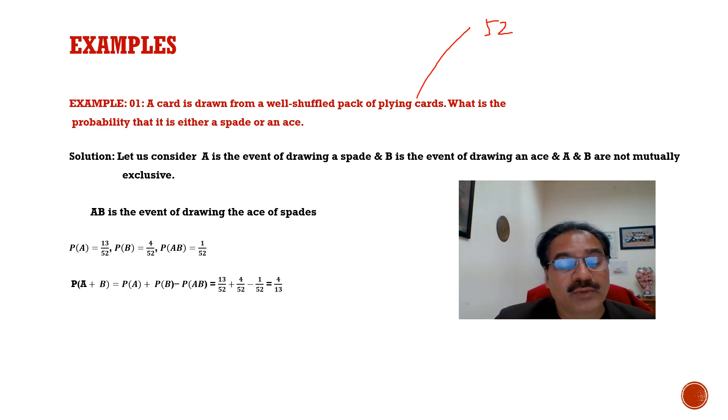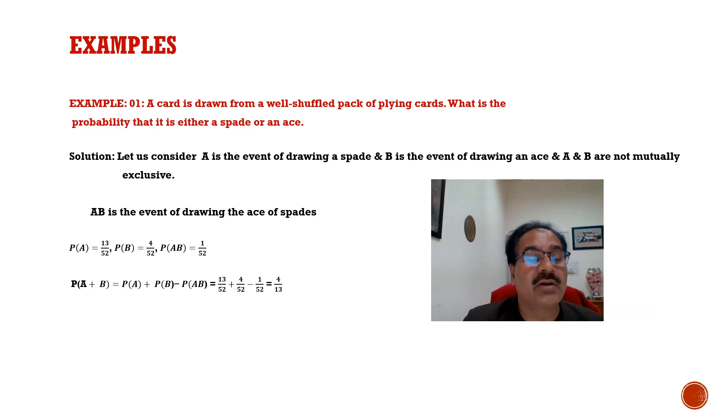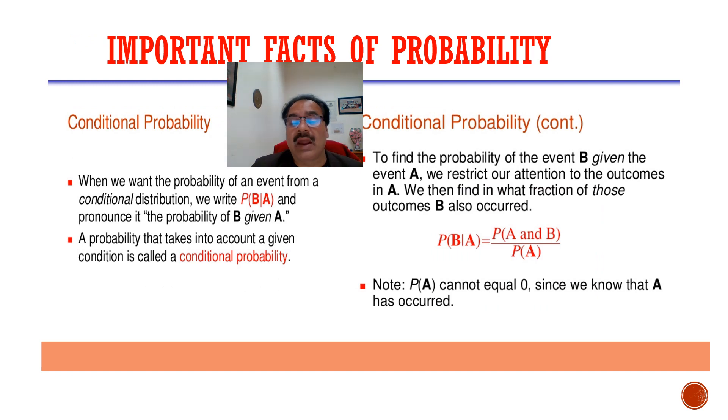Now just put all these results and you will get P of A plus B, that is 4 by 13. In this way, you got the probability that it is either a spade or an ace. 4 by 13 is the probability. Similarly, you can do another example.